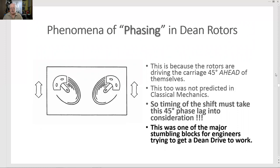Phenomena of phasing in D-rotors. This is because the rotors are driving the carriage 45 degrees ahead of themselves. This, too, is not predicted in classical mechanics. So, timing of the shift must take this 45-degree phase lag into consideration. This is one of the major stumbling blocks for engineers trying to get a dean drive to work.